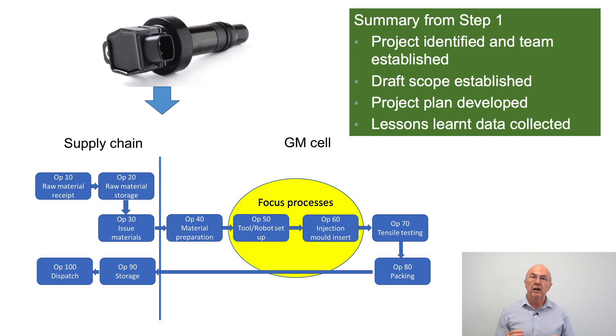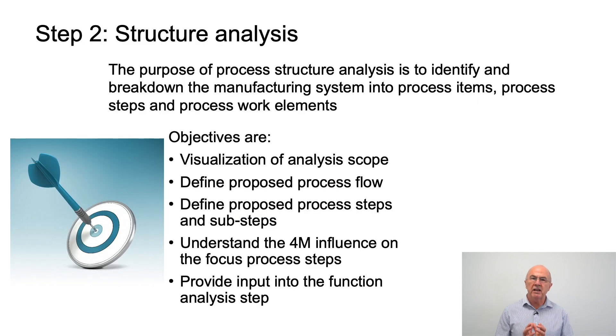The purpose of step two structure analysis is to identify and break down the manufacturing system into process items, process steps, and process work elements. The objectives are visualizing the scope, defining the process flow that we plan to use to make the product, defining the process steps and sub steps.